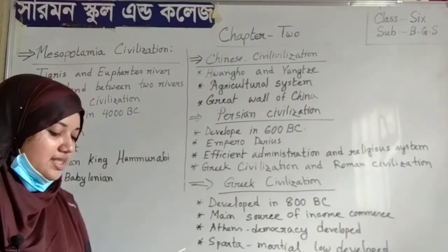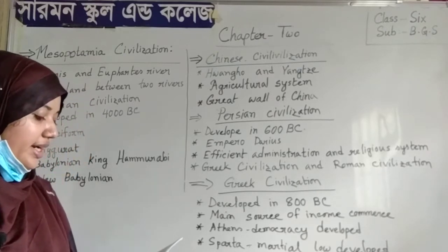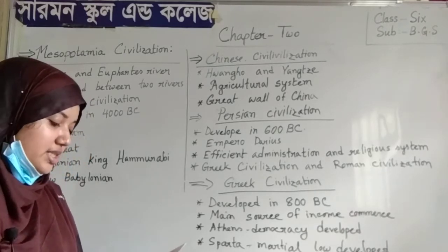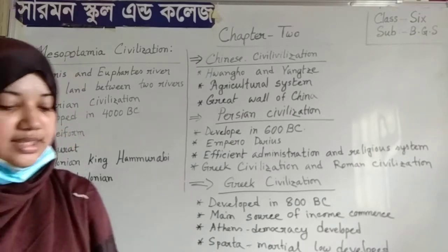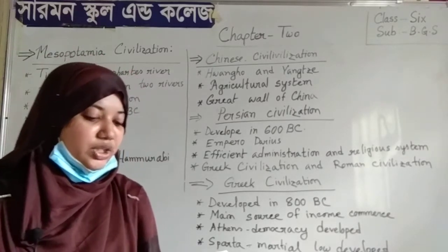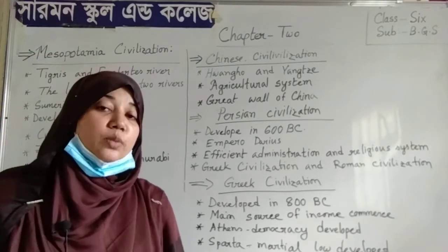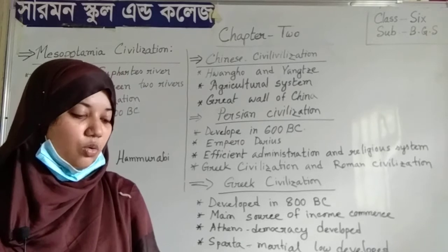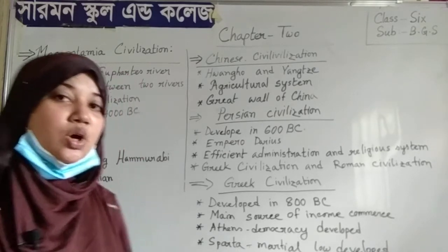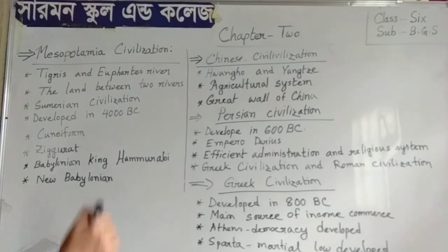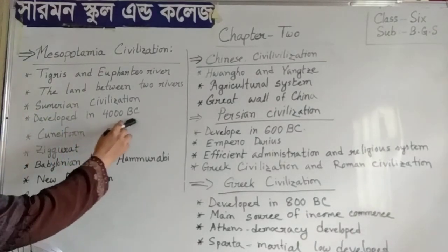Several civilizations developed at different times. They include the Sumerian civilization, Old Babylonian civilization, Assyrian civilization, and New Babylonian civilization, and so on. Sumerian civilization is the oldest of all these, and it developed in 4000 BC.